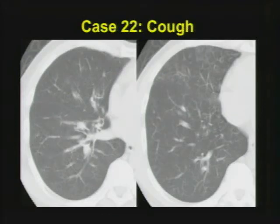Case twenty-two — not the best example of this particular entity, but it shows small pulmonary nodules to good effect. I want you to think: what is your differential when you're seeing nodules, particularly nodules with a branching pattern?